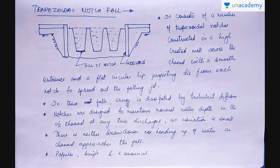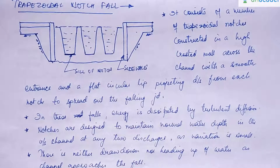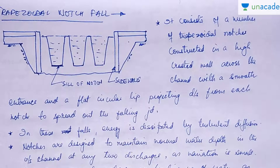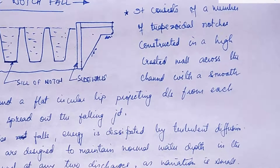Here you can see a trapezoidal notch fall. This is your trapezoidal shape. A trapezoidal notch fall consists of a number of trapezoidal notches constructed on a high crested wall across the channel.